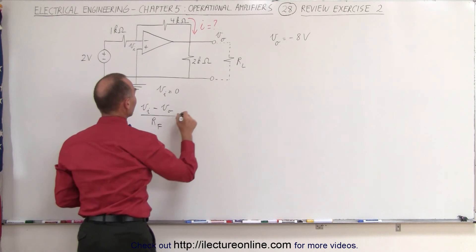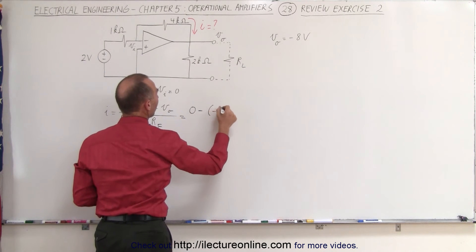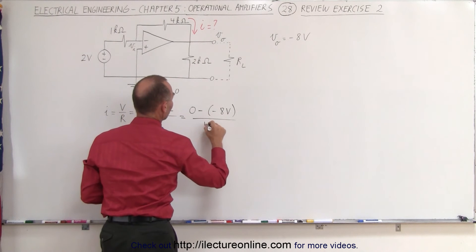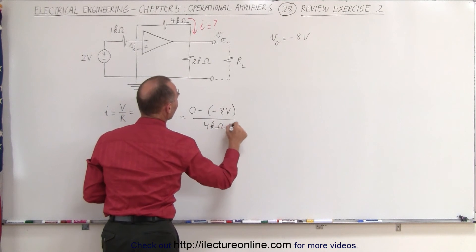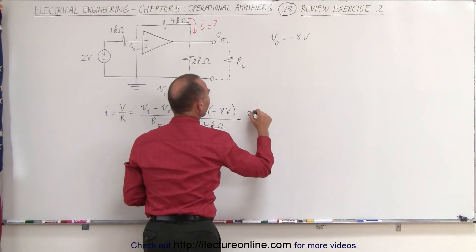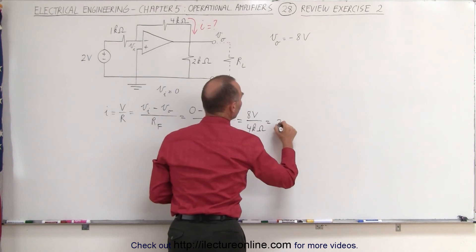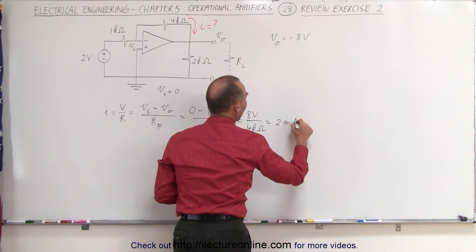So in this case that is going to be 0 minus minus 8 volts divided by the feedback resistor which is 4 kilo ohms which is equal to 8 volts divided by 4 kilo ohms which is equal to 2 milli amps.